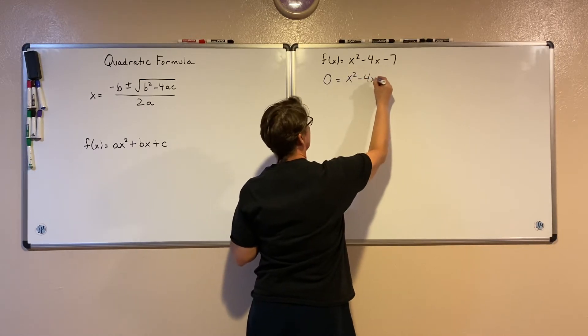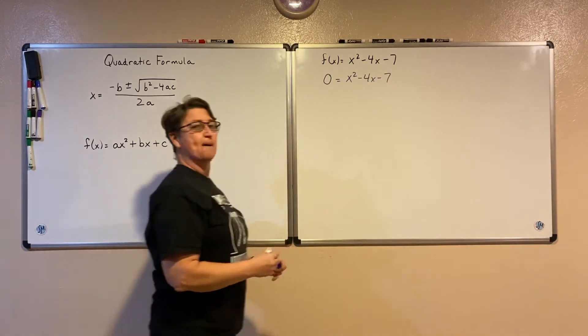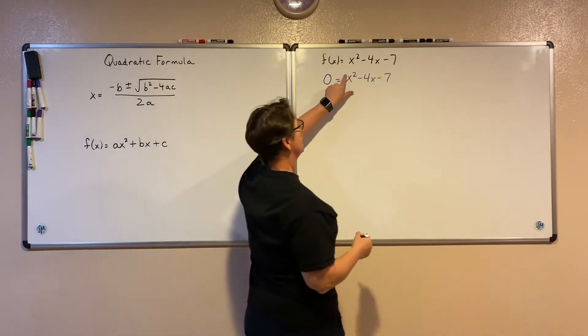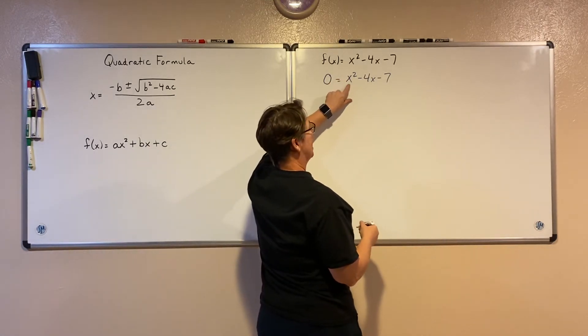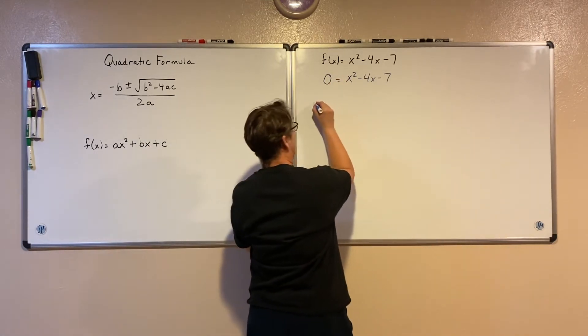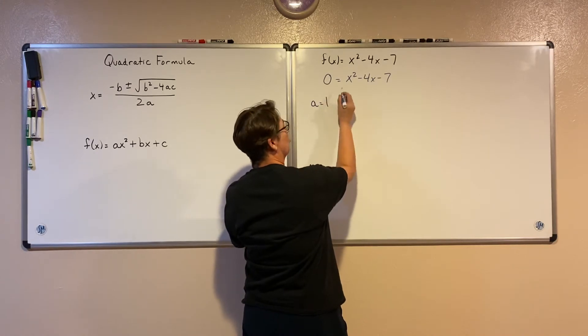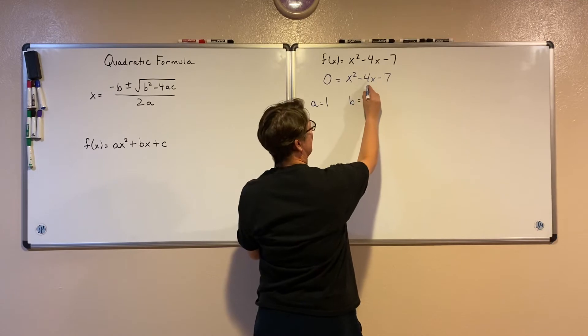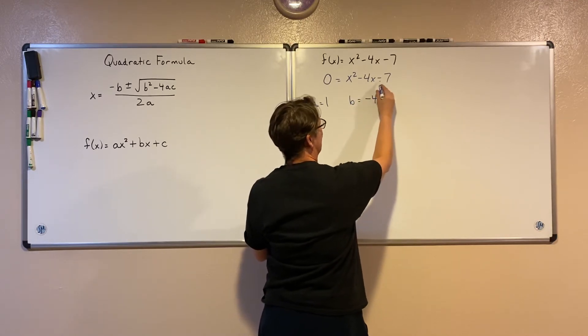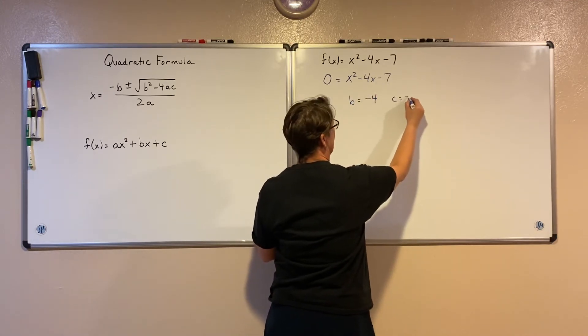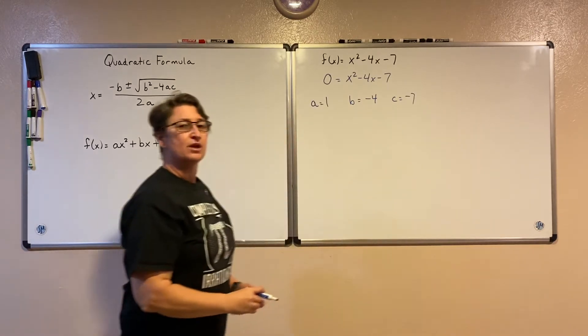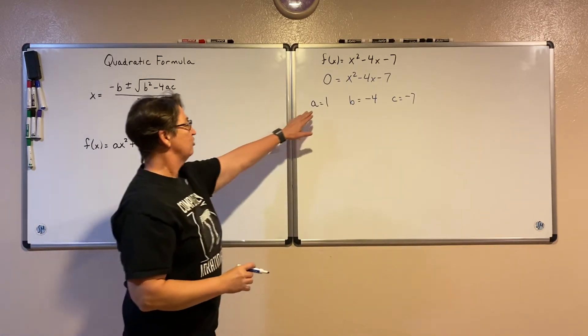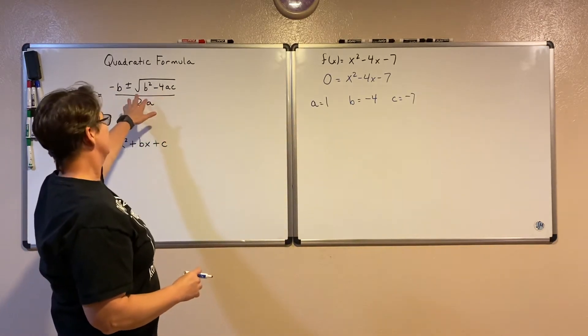So here I have a quadratic. My a in this case is that coefficient in front of my x squared, so my a is 1. My b is a negative 4, and my c is a negative 7.